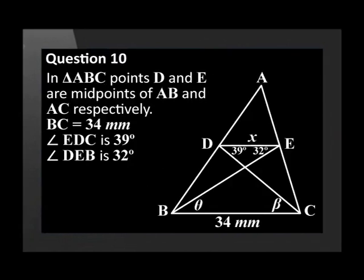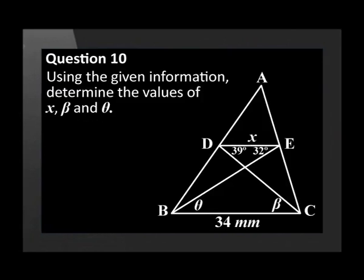In triangle ABC, points D and E are midpoints of AB and AC respectively. BC is equal to 34 mm. Angle EDC is 39 degrees and angle DEB is 32 degrees. Using the given information, determine the values of X, beta, and theta.